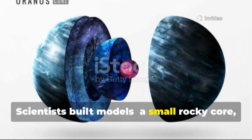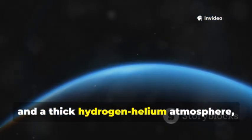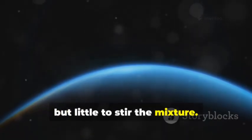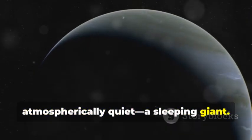Scientists built models: a small rocky core, a slushy mantle of ices, and a thick hydrogen-helium atmosphere but little to stir the mixture. Uranus was thought to be geologically and atmospherically quiet, a sleeping giant.